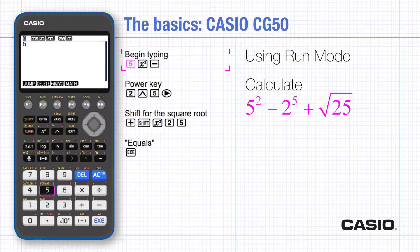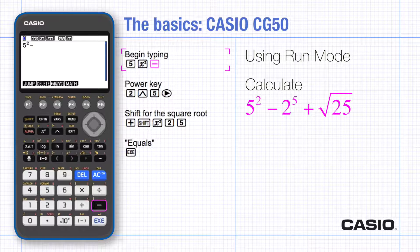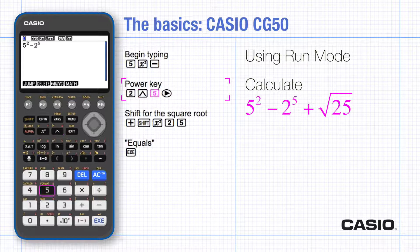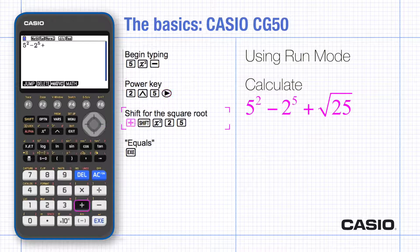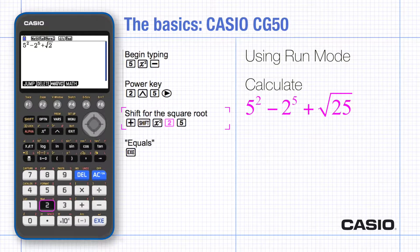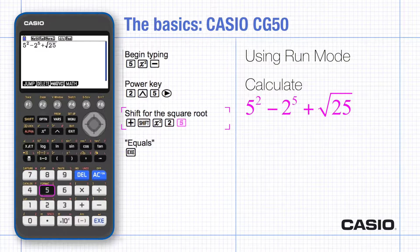There's a button for x squared. Use the power to type in the power 5 and then move the cursor to the right before typing in the plus. Use the shift key to activate the square root. Type the 25 and press the execute key for equals.